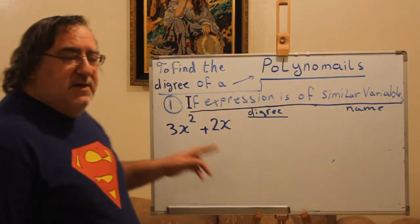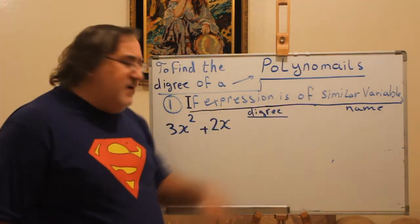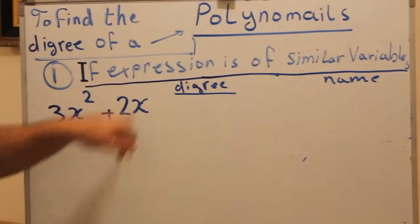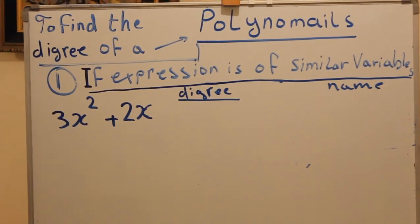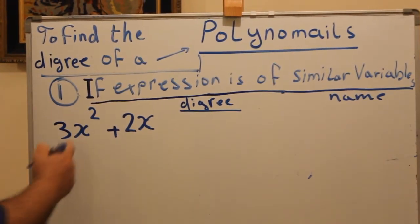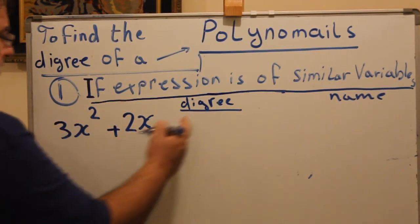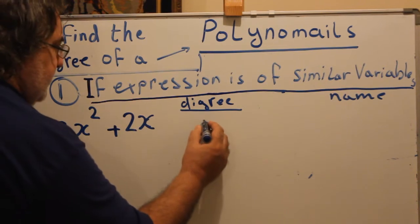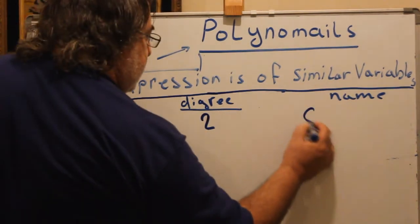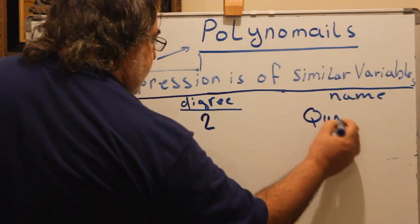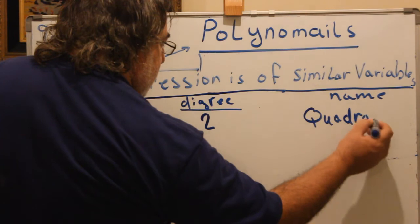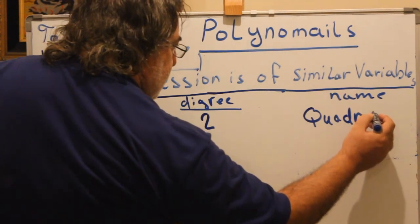We are still looking at expressions of similar variables. If we have an expression like 3x squared plus 2x, we look at the highest power, which is 2. So the degree is 2, or second degree, and the name is quadratic.